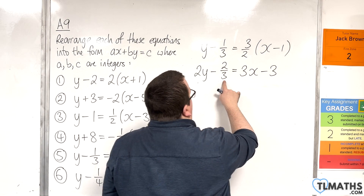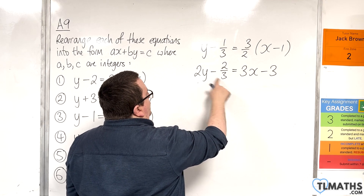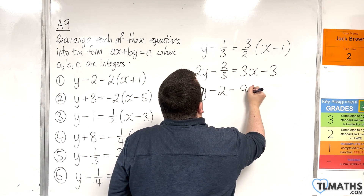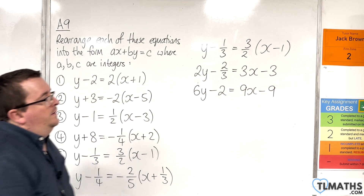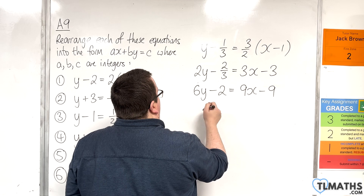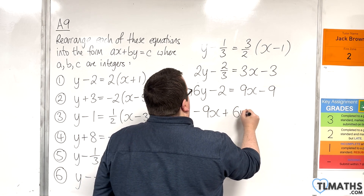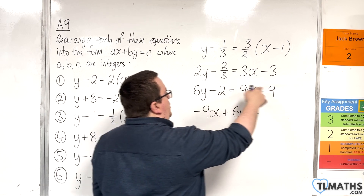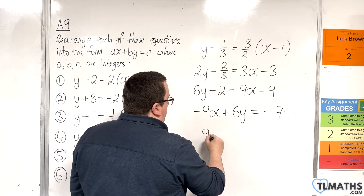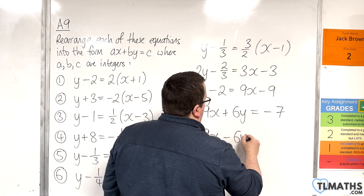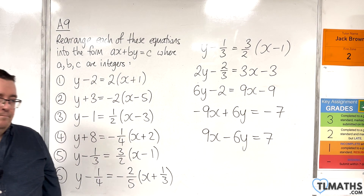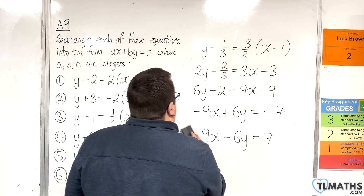Now I need to get rid of the remaining two thirds fraction, so multiply through by 3. That gives 6y take away 2 equals 9x take away 9. Rearranging: subtract 9x from both sides, leave the 6y, add 2 to both sides, giving minus 7. So the answer is minus 9x plus 6y equals minus 7, or equivalently 9x minus 6y equals 7.